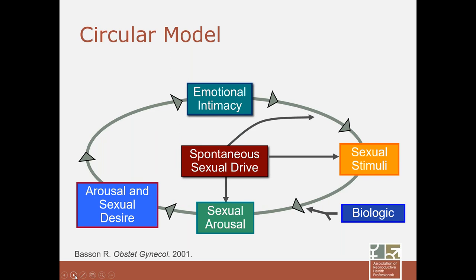The circular model is midway between the linear model — which focuses on excitement, orgasm, and resolution — and the biopsychosocial, which focuses on the whole person's milieu. The circular model thinks about, for a particular instance of sex, how we incorporate the motivation for sex: some of which is sexual pleasure, some emotional intimacy, relationship satisfaction. This model helps us understand that there are a variety of motivations for sex and helps us think about the different ways that desire is developed.